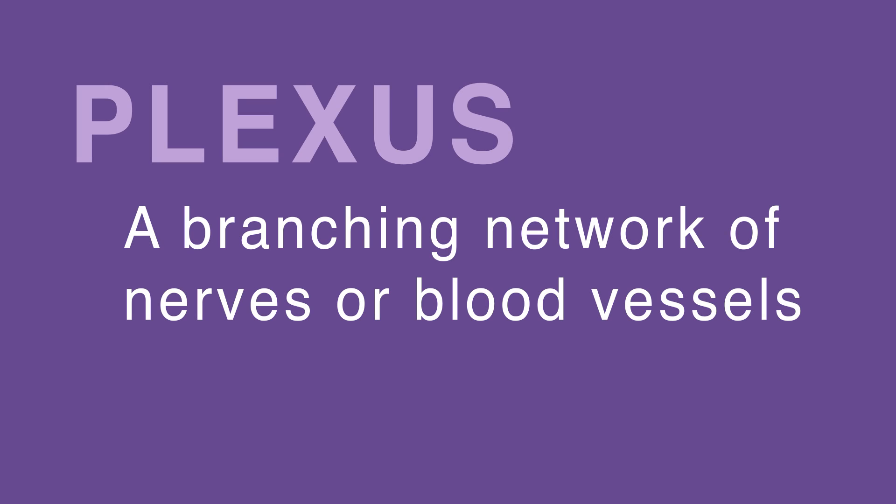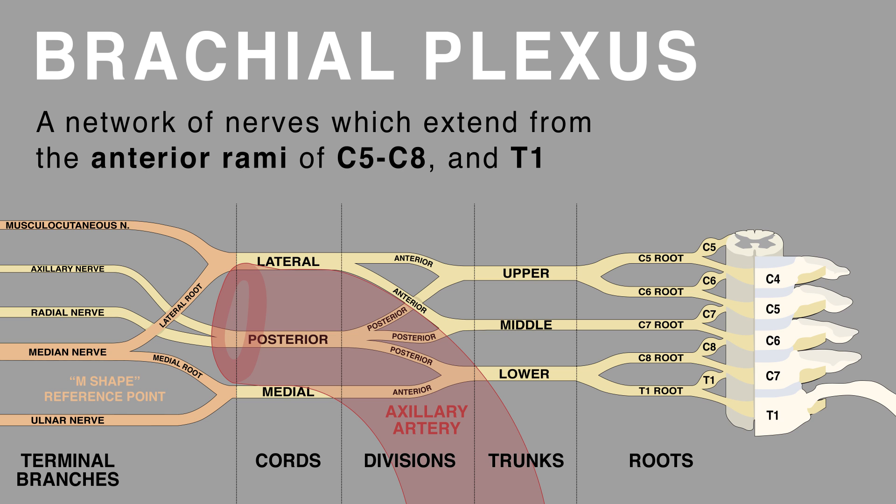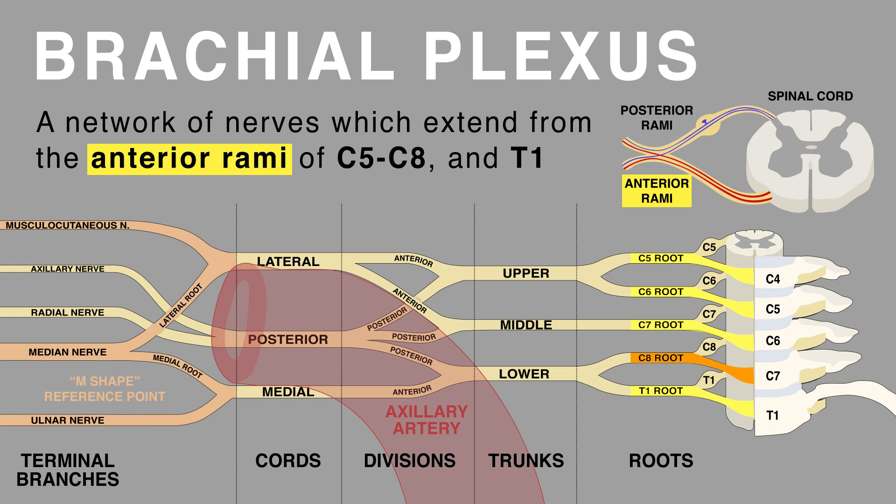A plexus is a branching network of nerves or blood vessels. The brachial plexus is a network of nerves which extend from the anterior rami of cervical nerves C5 to C8, as well as the first thoracic root, T1.